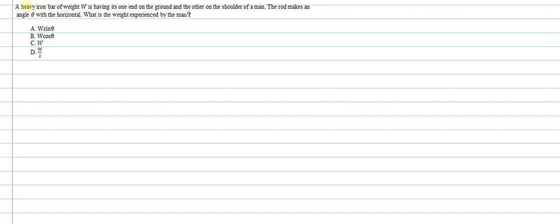Hello students, let's understand this question. A heavy iron bar of weight W is having its one end on the ground and the other on the shoulder of a man. The rod makes an angle theta with the horizontal. What is the weight experienced by the man?